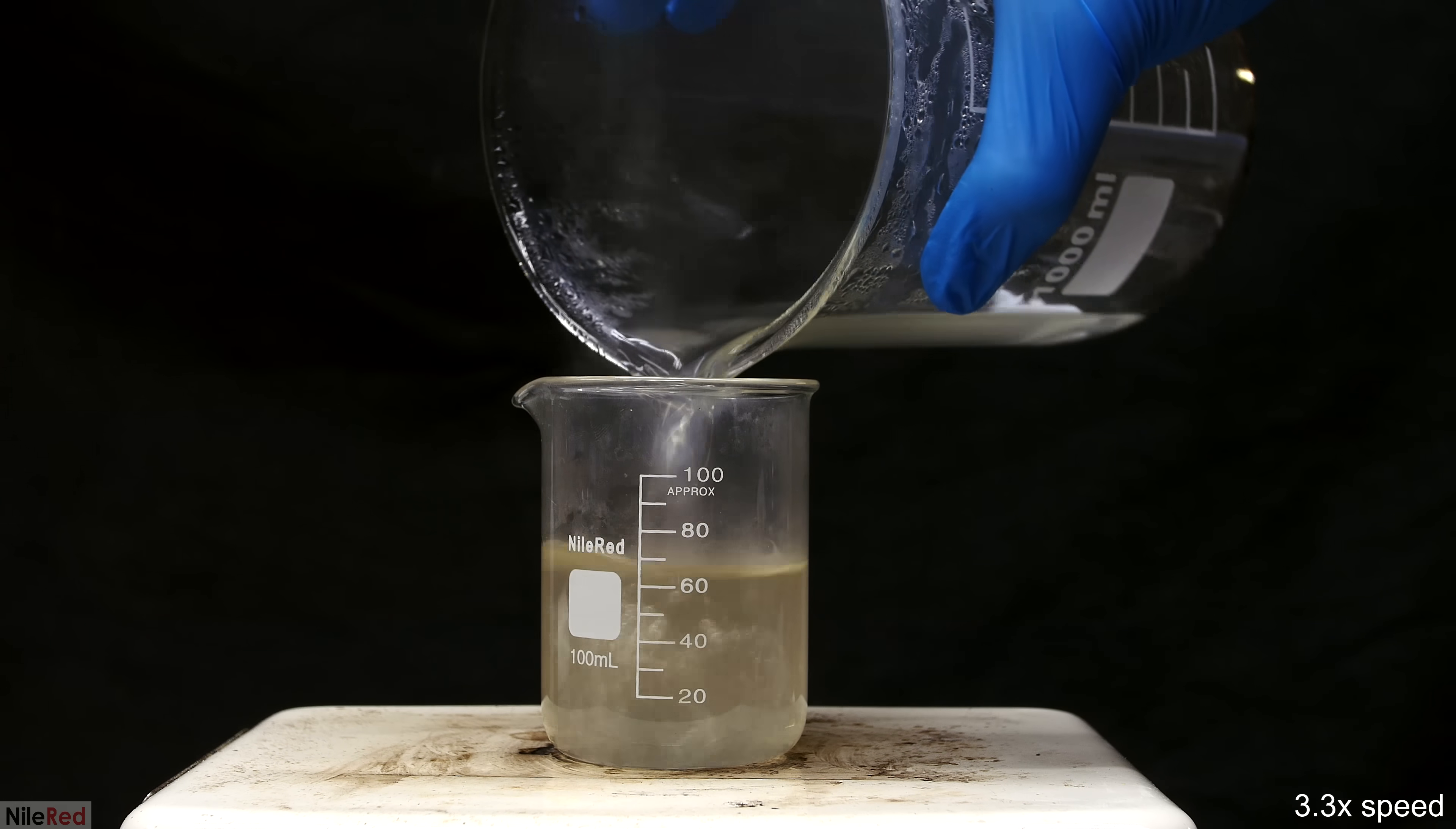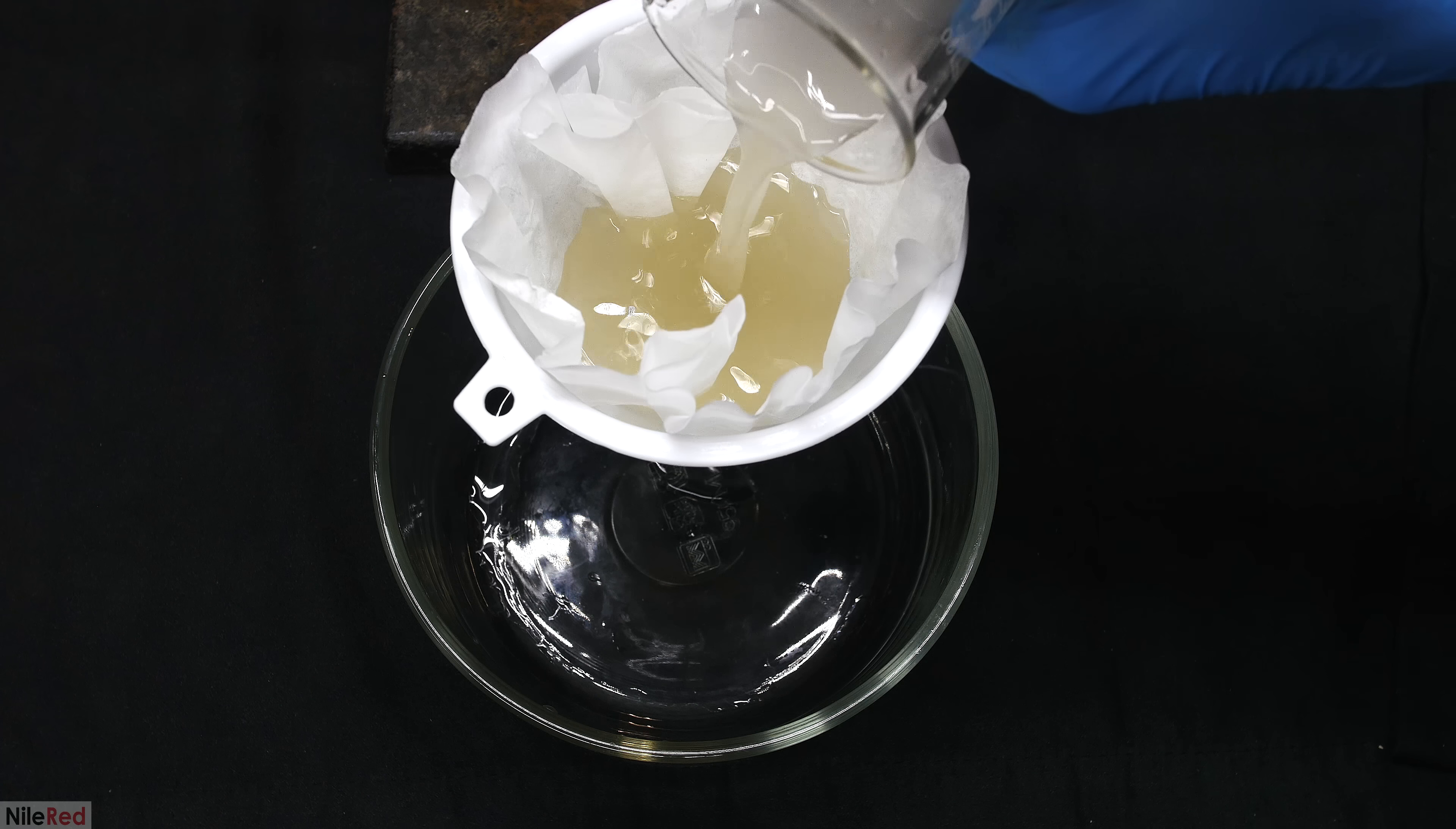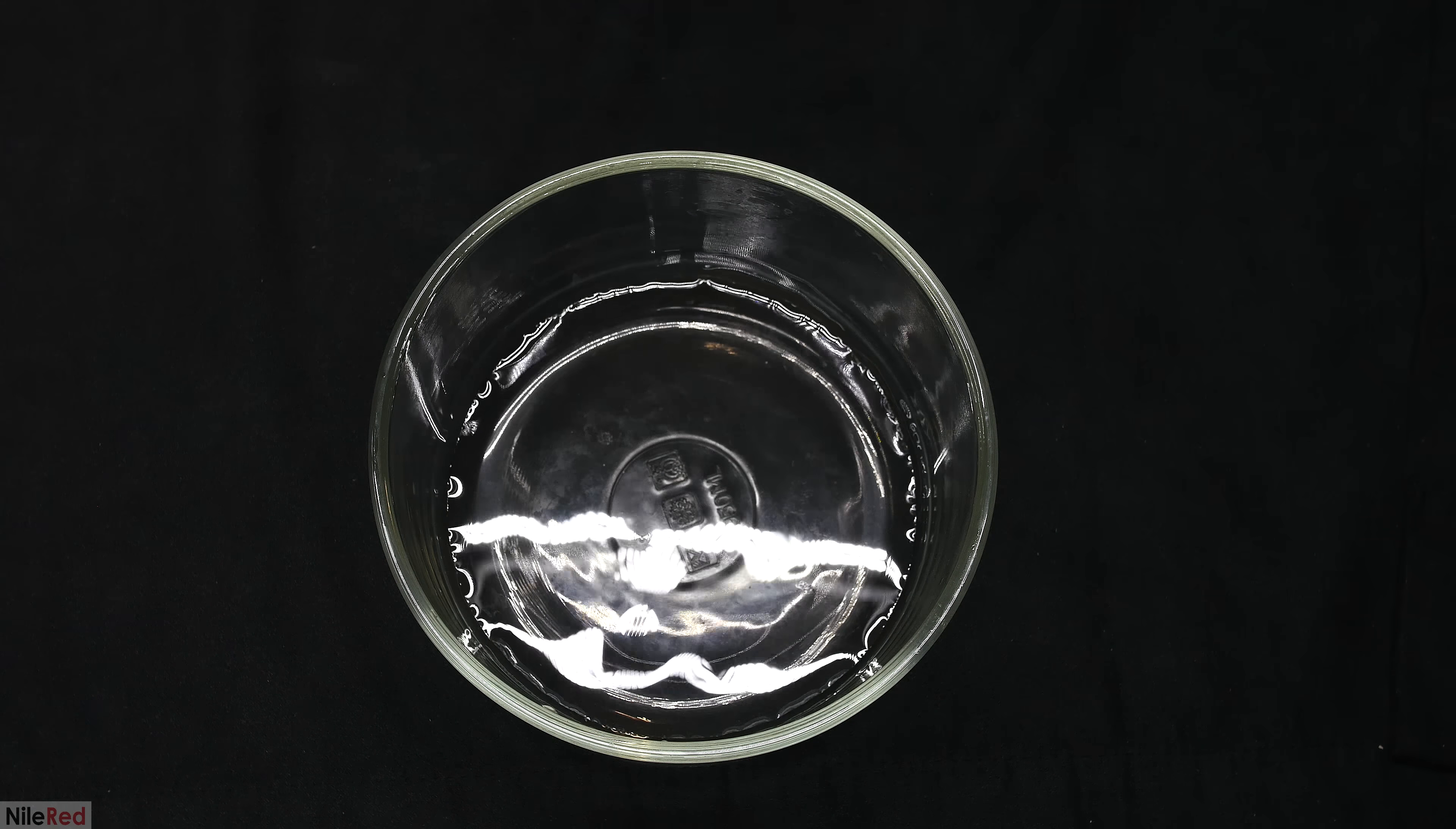Once the volume was at around 100 milliliters I transferred it to a smaller beaker. It was further boiled down until about 70 milliliters and then it was taken off the hot plate. I let it cool down to room temperature and then I transferred it to a bowl to evaporate. To separate off the white powder it was pretty easy and I just filtered it through a coffee filter. Once everything had filtered through I was left with a nice and clear citric acid solution.